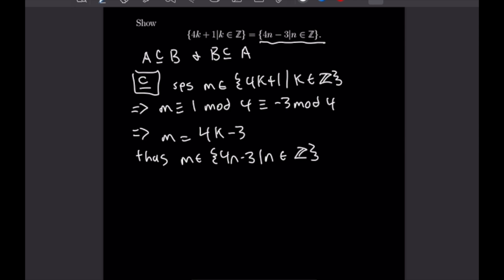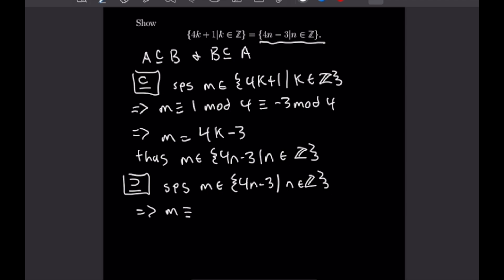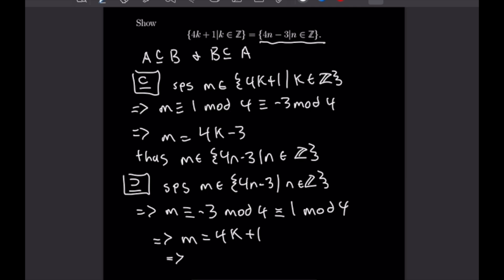For the reverse direction, we are going to do the same thing but for the right-hand side: we suppose M is in the set 4n−3 for an integer n, and that means we can write M as congruent to −3 mod 4. Just as before, that will be congruent to 1 mod 4, which means we can write M as 4 times k plus 1, and of course M is in the set 4k+1 for some integer k.